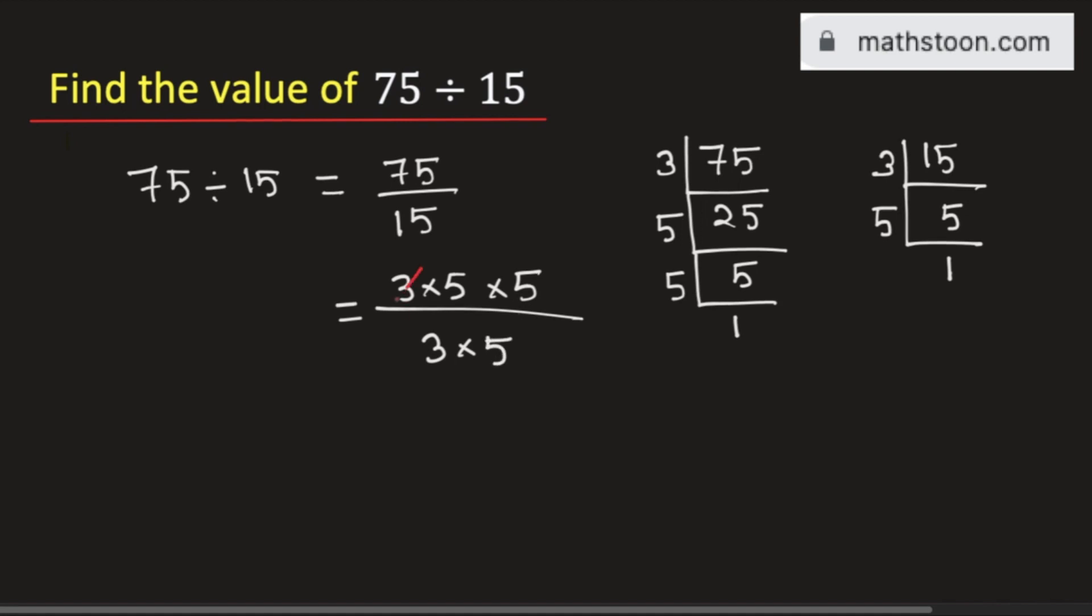See that 3 and 3 get cancelled, 5 and 5 get cancelled. So we are left with only 5. So 5 is the answer when 75 is divided by 15. This is our final answer. Thank you for watching.